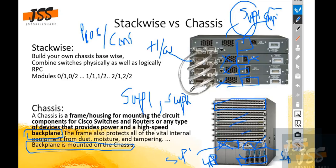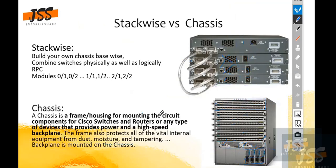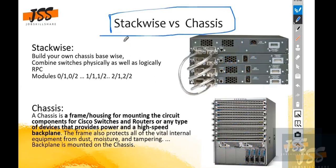In chassis, when a frame comes in it hits the shared backplane and is forwarded directly — it doesn't need to travel from switch to switch. In StackWise, a frame coming to switch two hits the backplane of switch two specifically and is forwarded from there. You can take this as an assignment — find the pros and cons and differences between StackWise and chassis, and share on Discord.